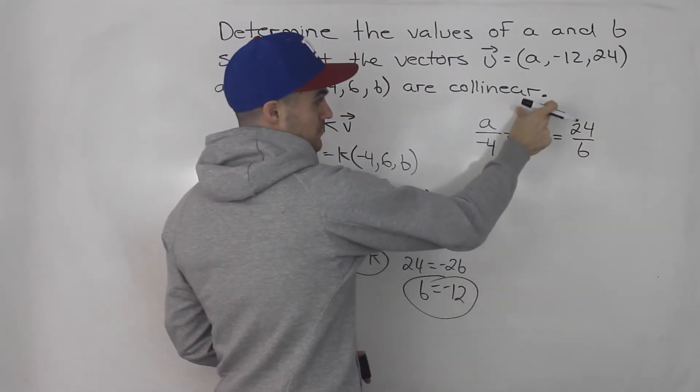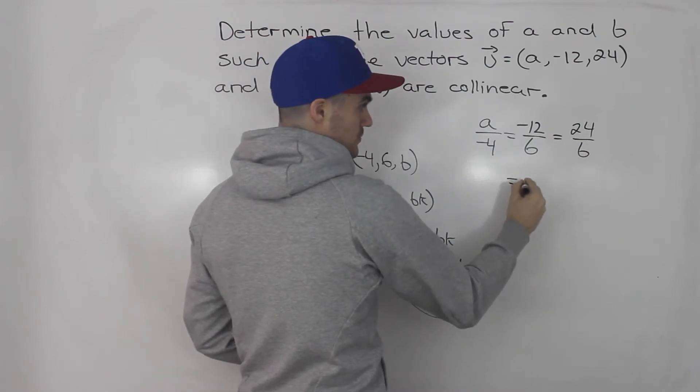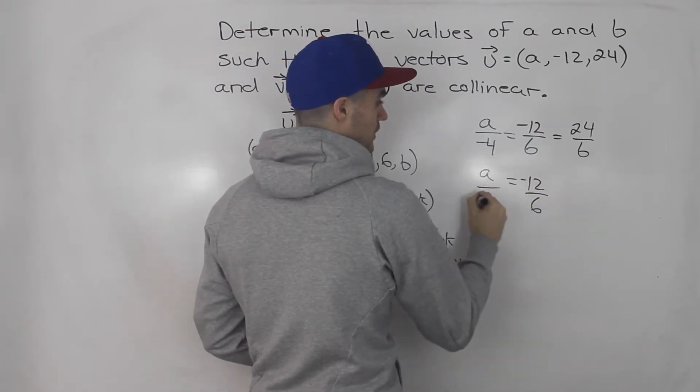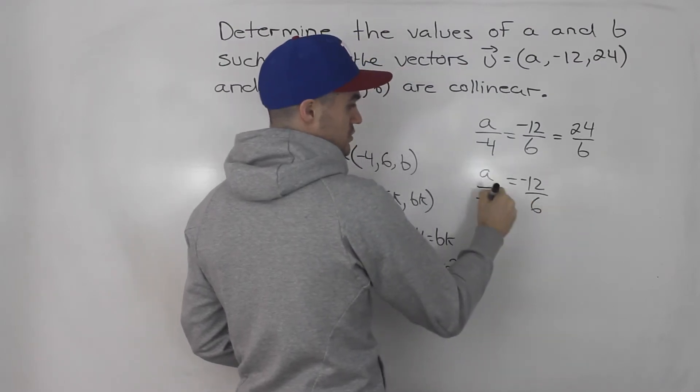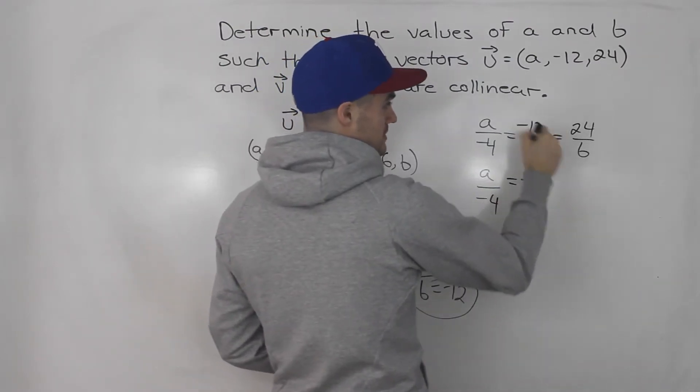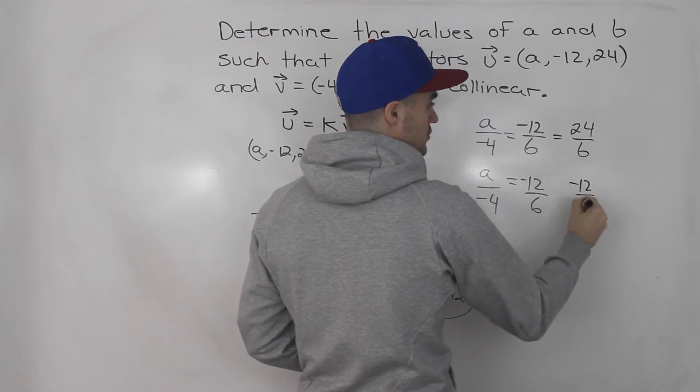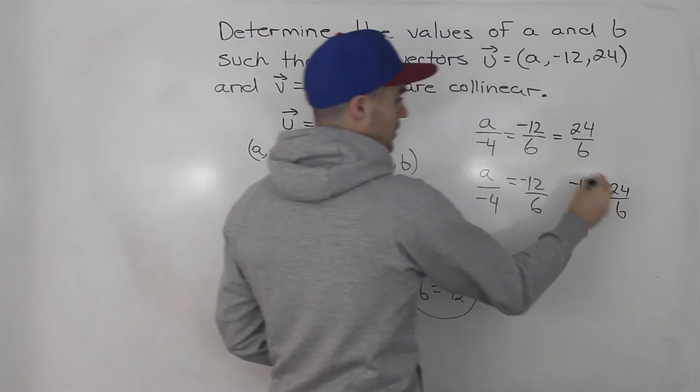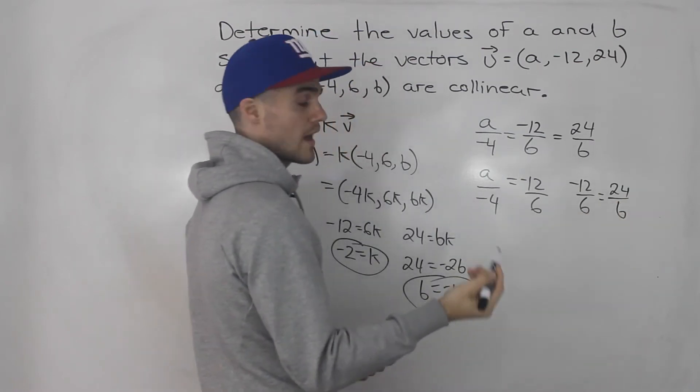And then you just find the one that has the ratio that has only numbers. So -12 over 6 has to equal A over -4. And you can just cross multiply, solve for A. Same thing here, you can take that same ratio, -12 over 6, make it equal to 24 over B, cross multiply, and then solve for that B.